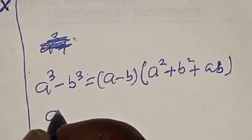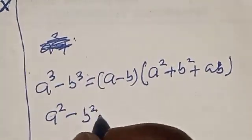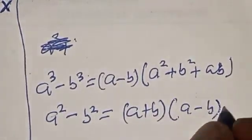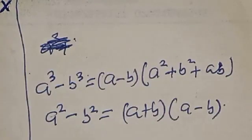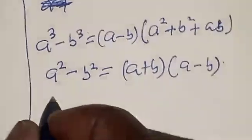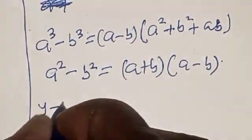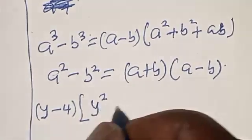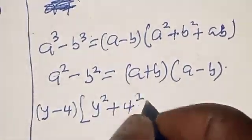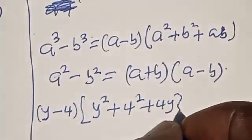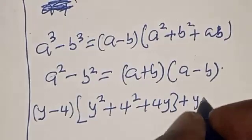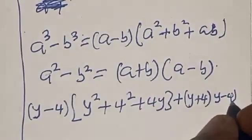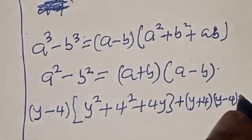Also, a squared minus b squared is equal to (a plus b) multiplied by (a minus b). In this case our a is y and our b is 4. Applying these identities, we get: (y minus 4)(y squared plus 4 squared plus 4y) plus (y plus 4)(y minus 4) equals zero.